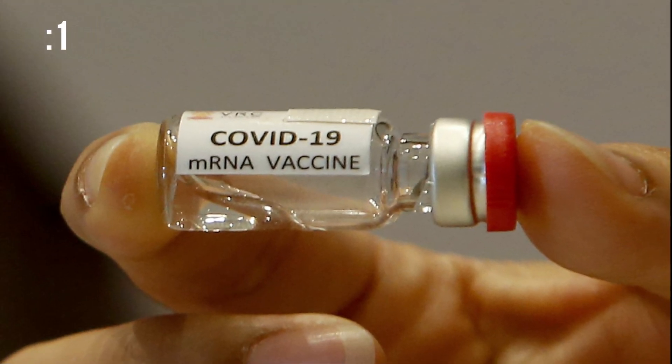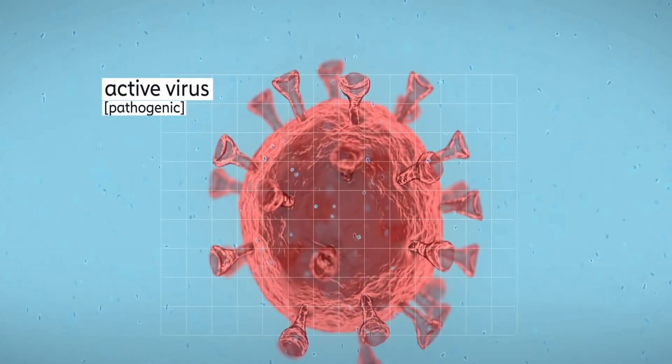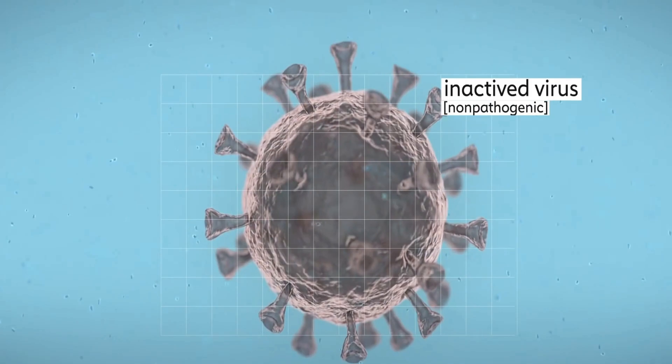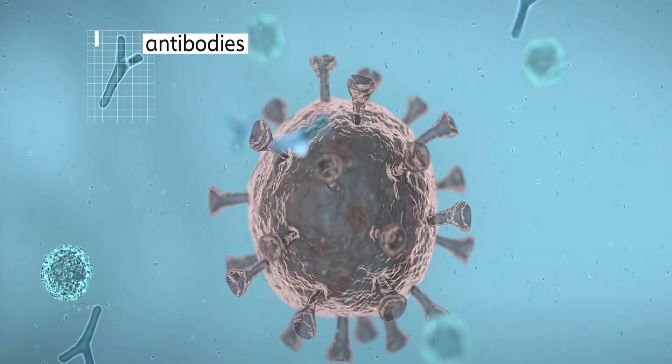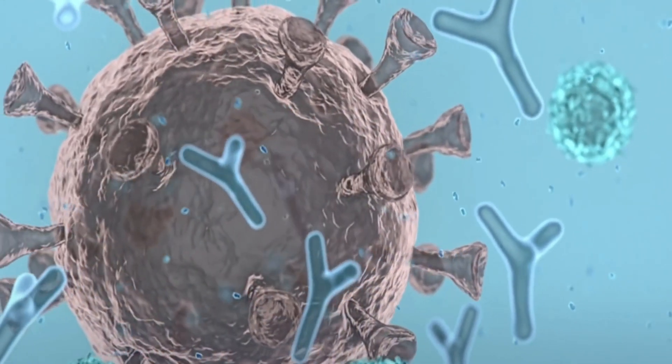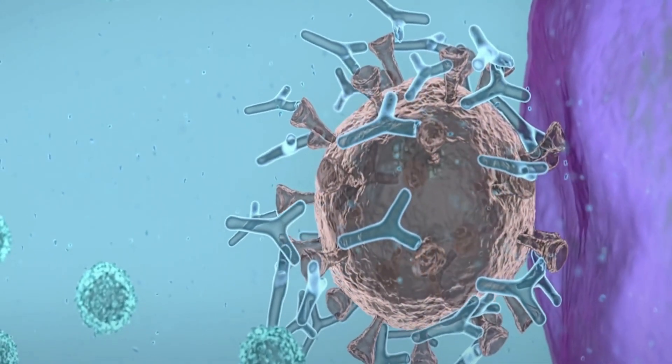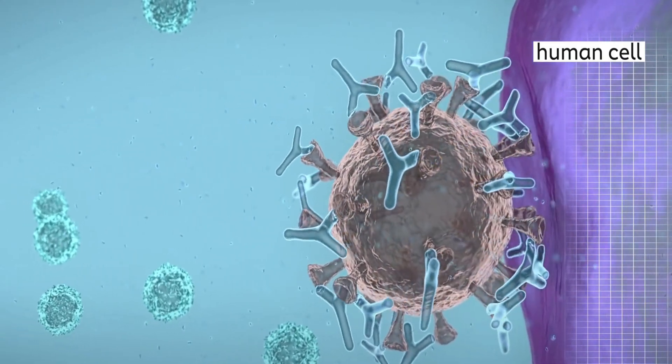mRNA vaccines contain material from the virus that causes COVID-19 that gives our cells instructions for how to make a harmless protein that is unique to the virus. After our cells make copies of the protein, they destroy the genetic material from the vaccine. Our bodies recognize that the protein should not be there and build T lymphocytes and B lymphocytes that will remember how to fight the virus that causes COVID-19 if we are infected in the future.